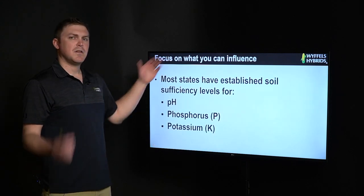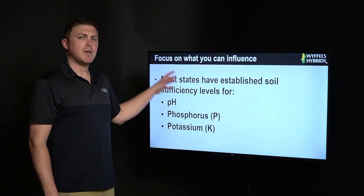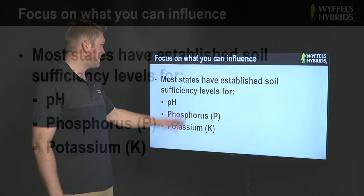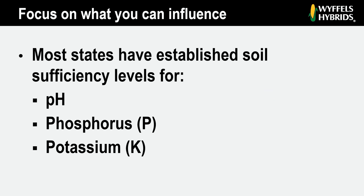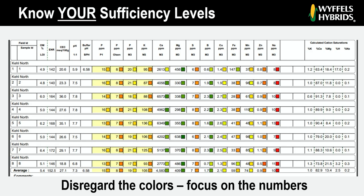I want to round this out by talking about focusing on what you can influence. Depending on what state you're in, pretty much everyone has established soil sufficiency levels or optimum levels for things like pH, phosphorus, and potassium — and depending on your state, there are even more established levels. These are the big three that pretty much everyone has optimum levels for. I would encourage you to check into those levels because they can vary within a state depending on what region you're in, and they absolutely vary state to state.